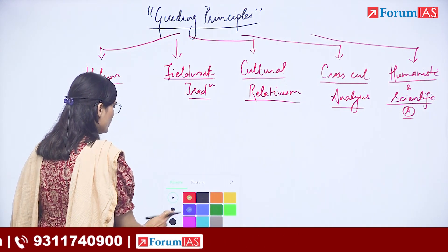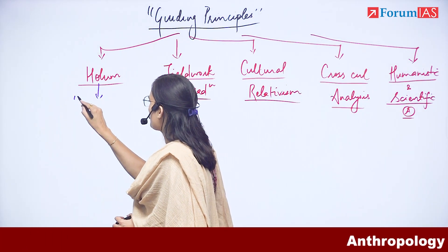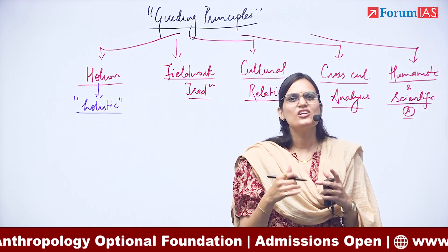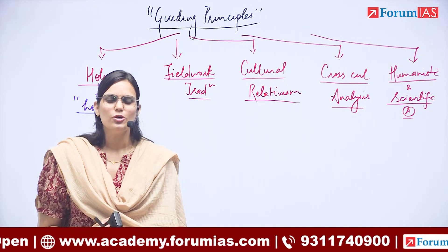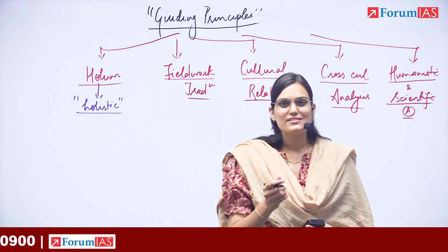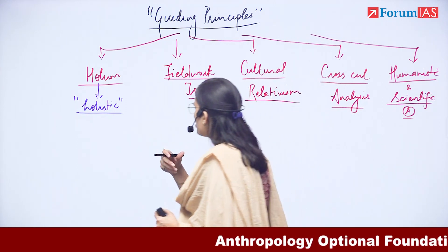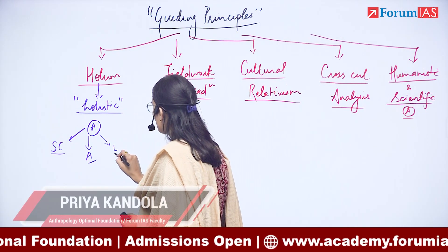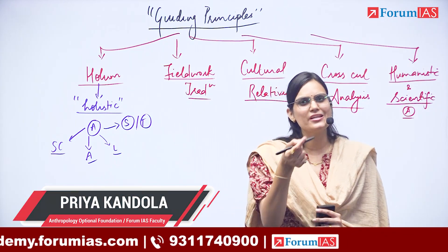Let us see one by one what these terms broadly indicate. The first term is Holism, derived from the word 'holistic', which means an all-round study or all-round perspective of anthropology as a discipline. In the first video, I told you that anthropology is the holistic study of man across space and time. Holistic means all-round perspective — focusing on every aspect: the sociocultural, archaeological, linguistic, and tribal components. That is the meaning of Holism.